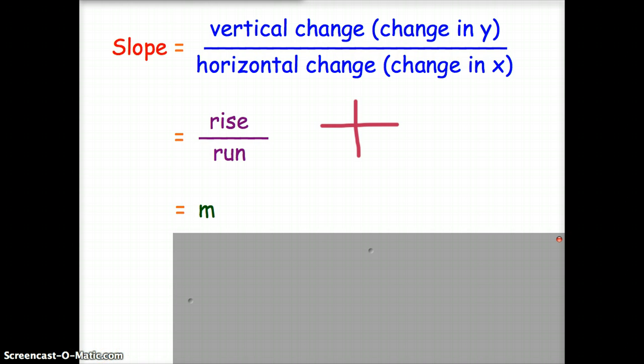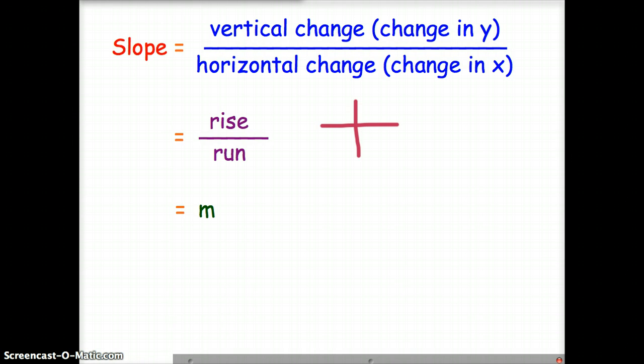We also use the letter m to denote slope. You can think of m as in mountains, and that may help you to remember what that letter m means. For our purposes, we are also going to think of slope as y2 minus y1 over x2 minus x1. So this is our changes in y's over our changes in x's.